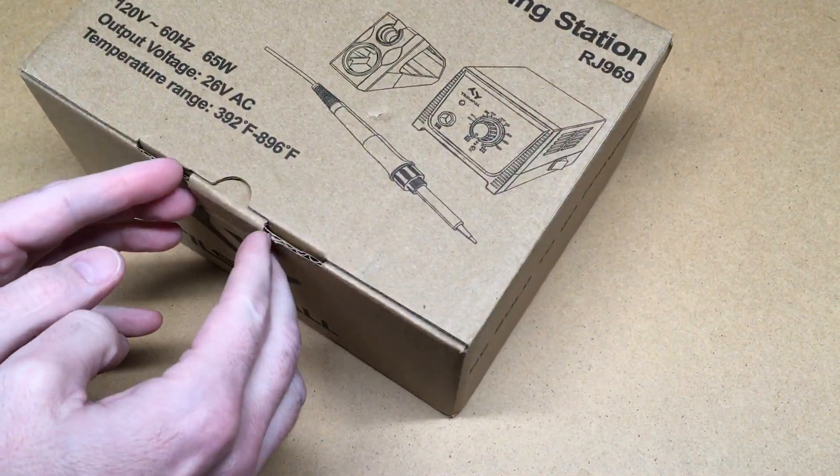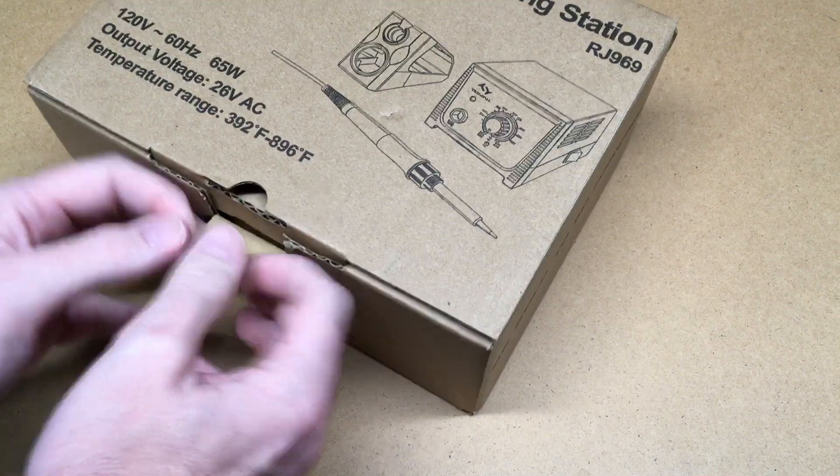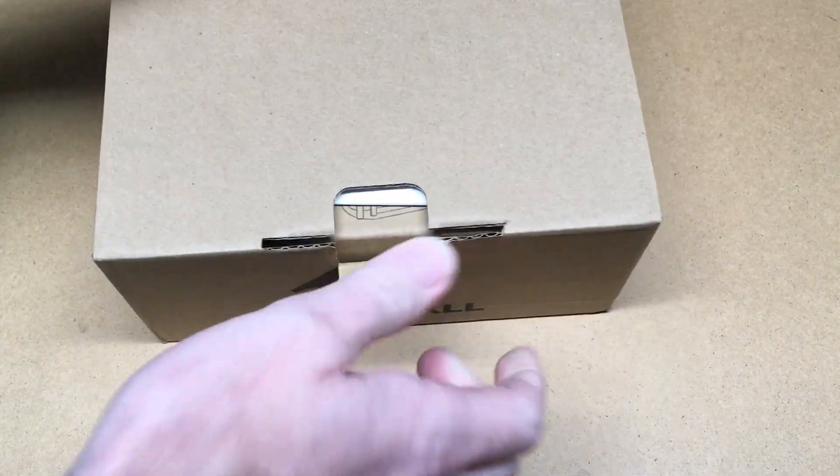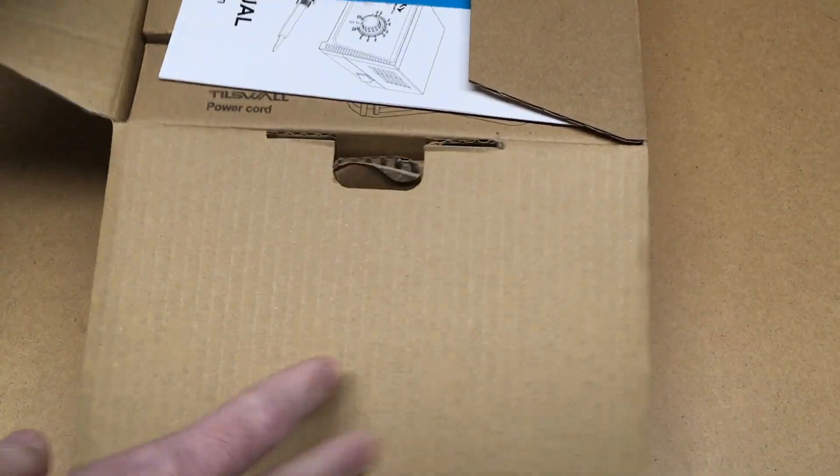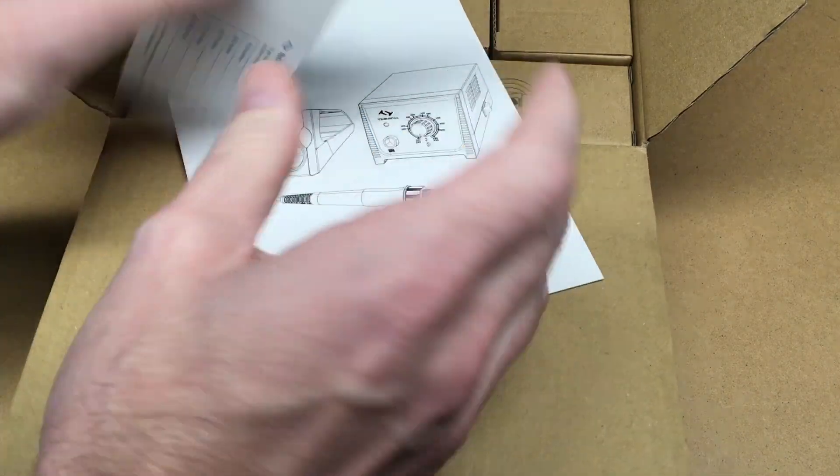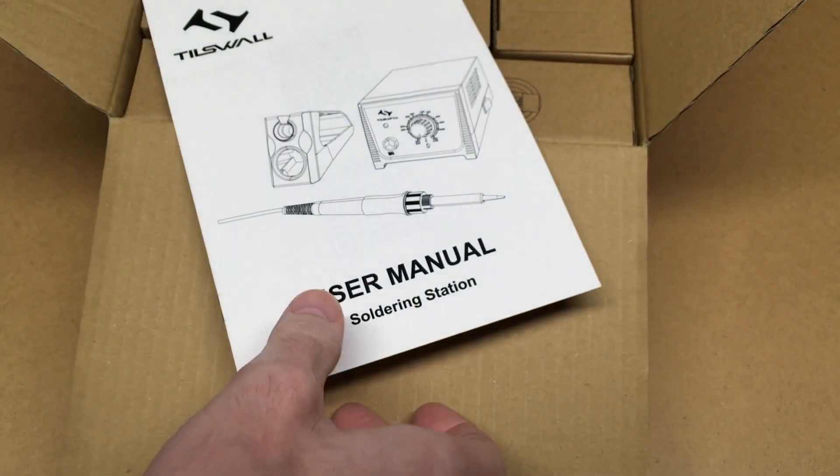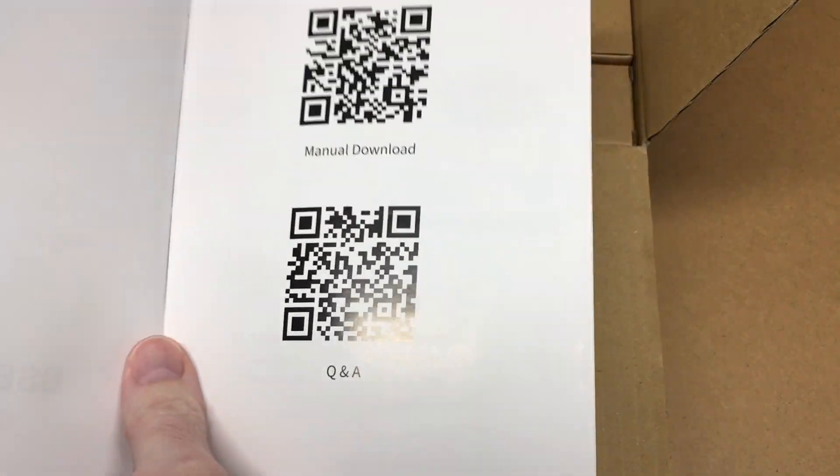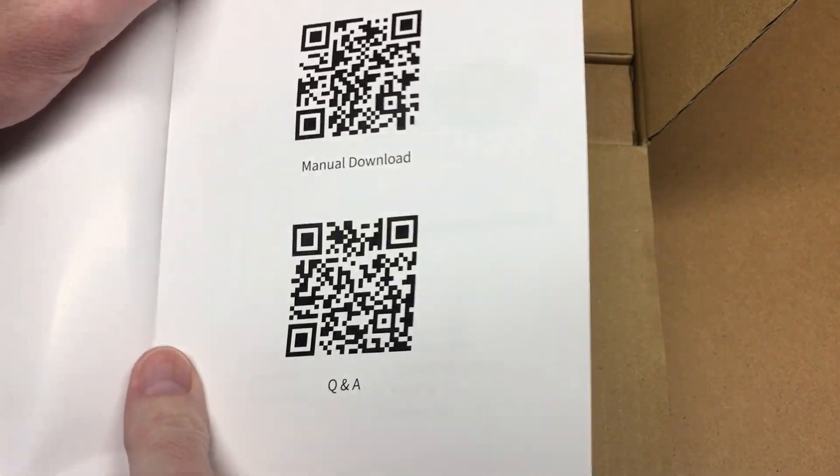I have a couple of soldering irons. I don't have a precision soldering iron, just a regular wand that you plug in with a set temperature, and a trigger one for soldering bigger things. Here's the warranty card and the user manual. You can download the manual - that's kind of nice. And there's a Q&A section.